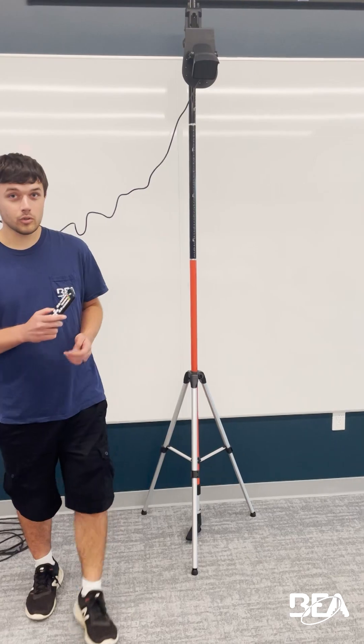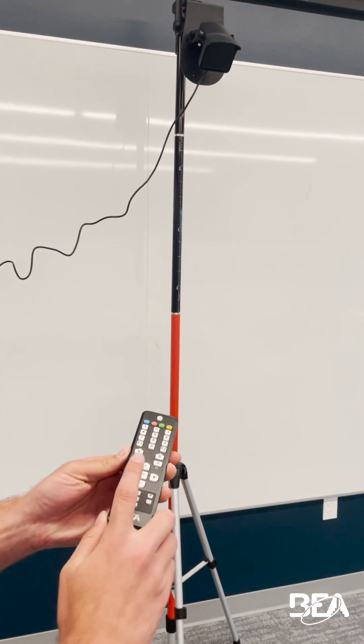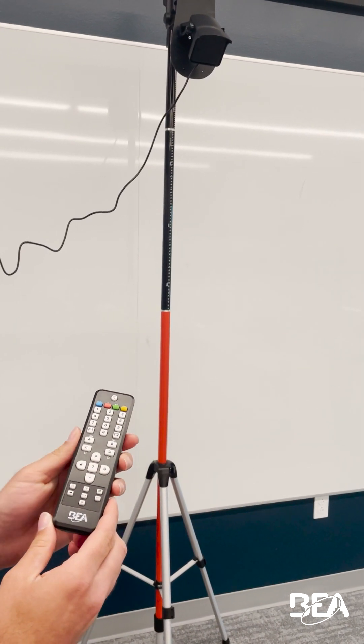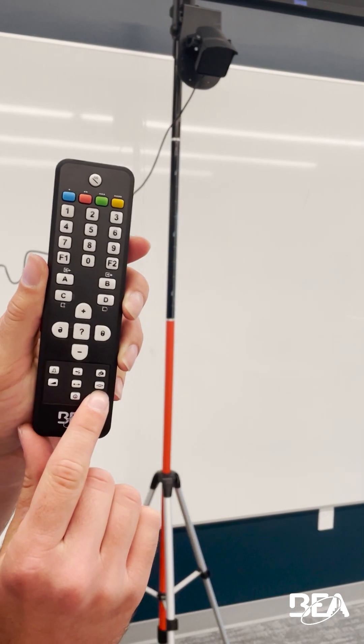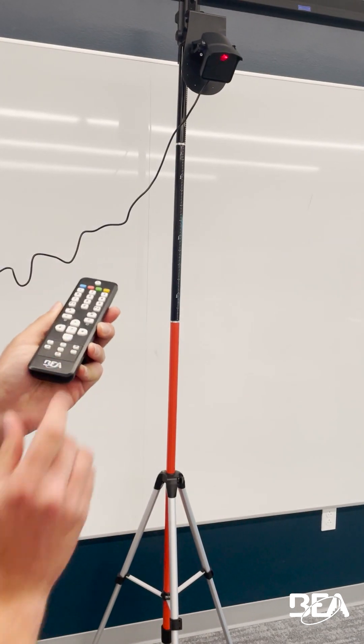To get started, use your remote. You're going to hit unlock. It's going to flash right on the Falcon. Hit this little shaky box icon. It's going to flash faster.